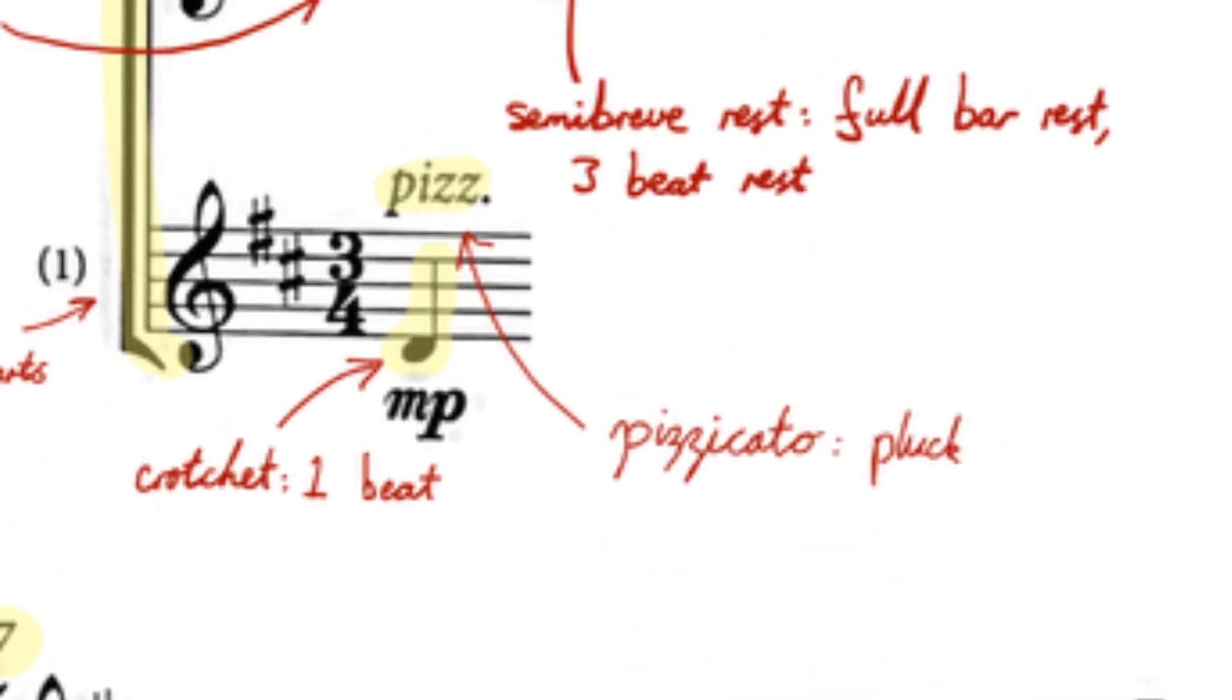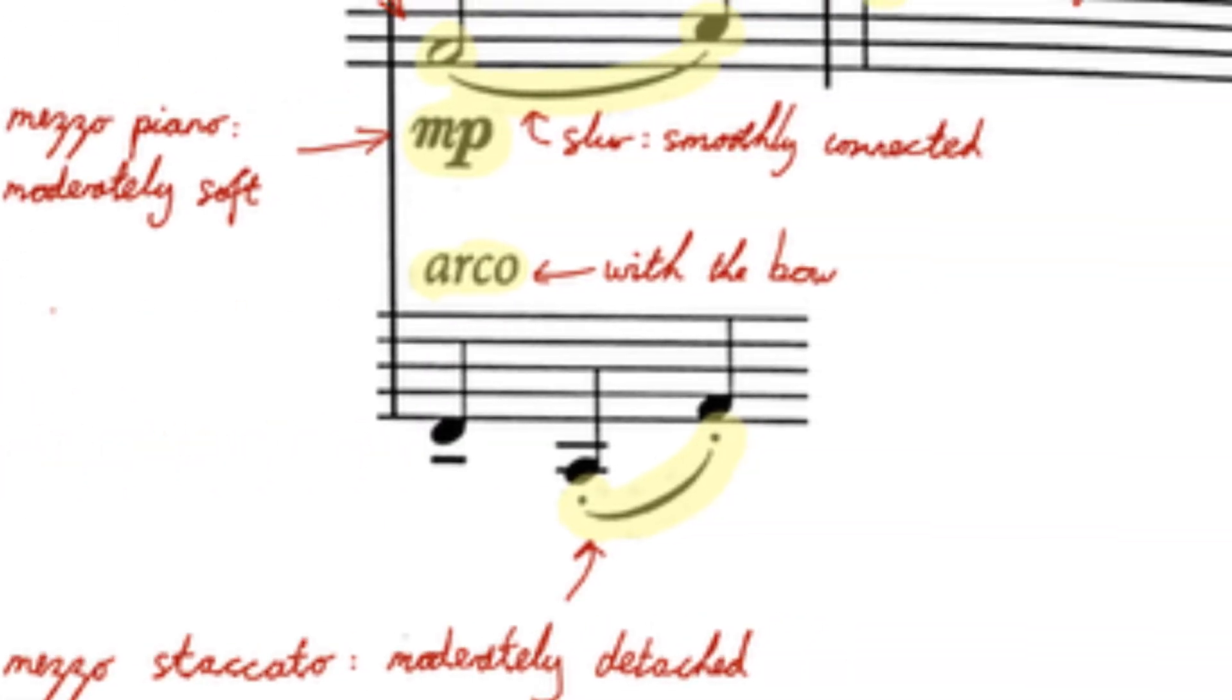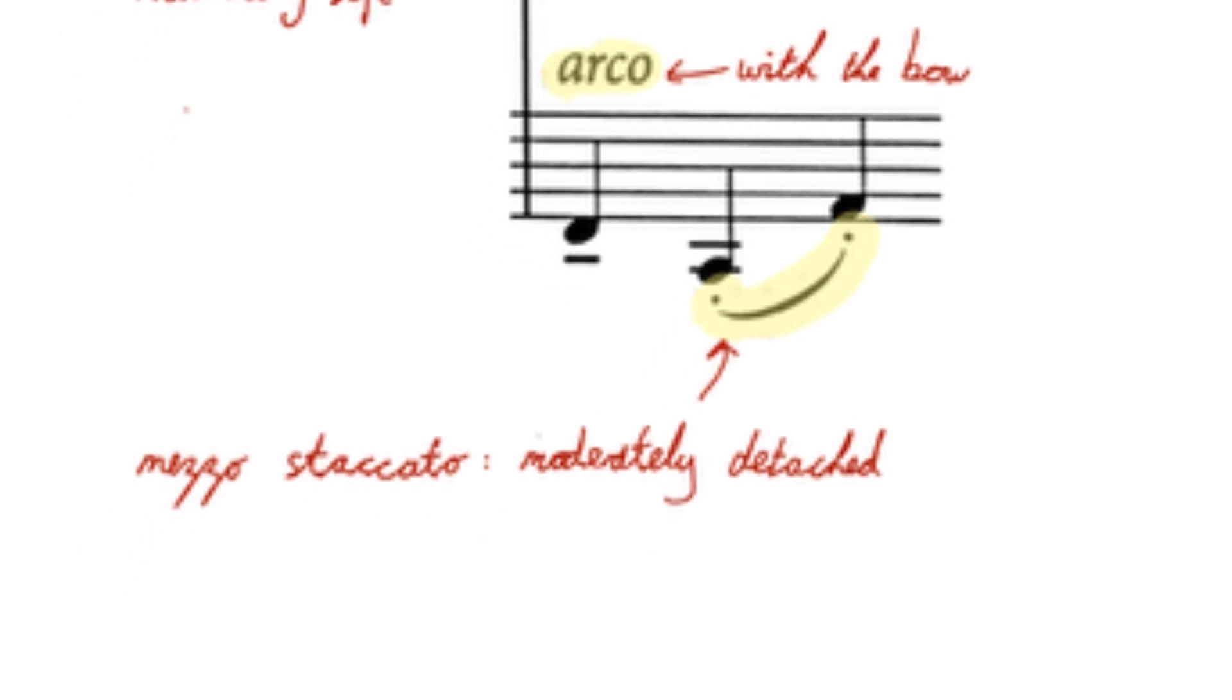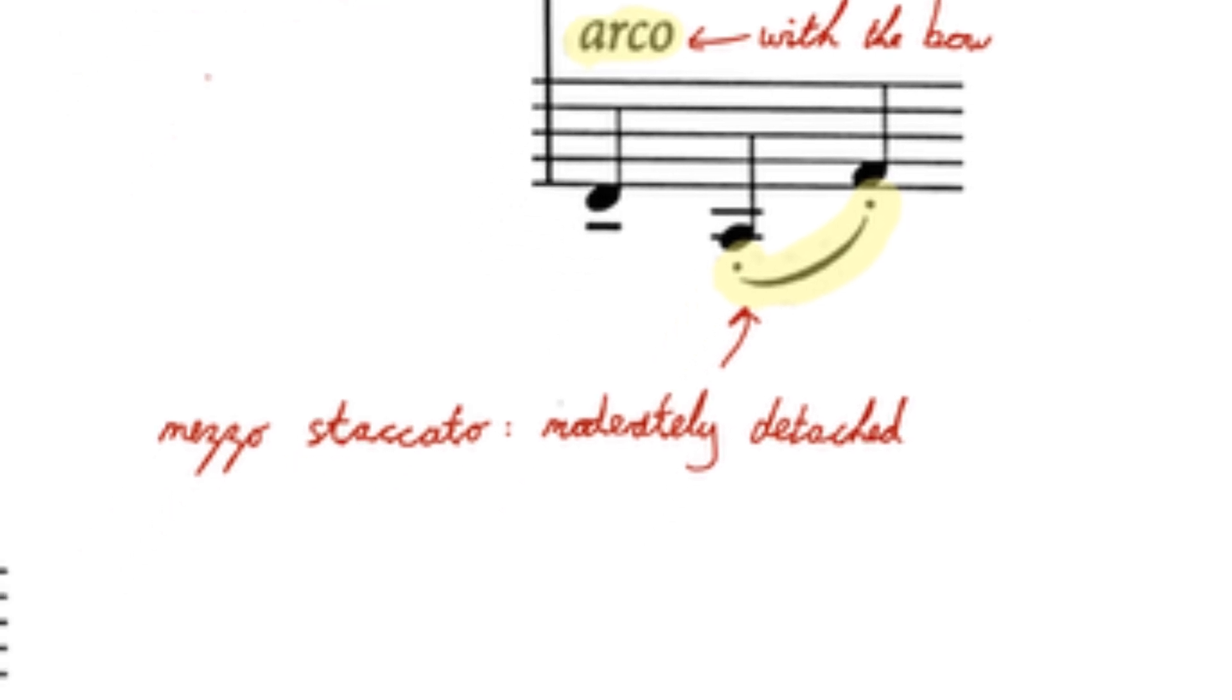The violin two part starts out pizzicato, which means to pluck the violin, and then changes to arco, meaning to bow the violin. It also features the articulation mezzo staccato, meaning to play moderately detached. On violin, we can do this by playing the two notes in one bow, but stopping or slowing down the bow between each note.